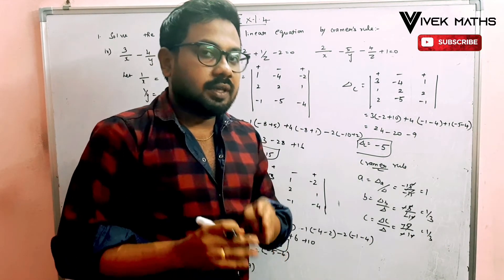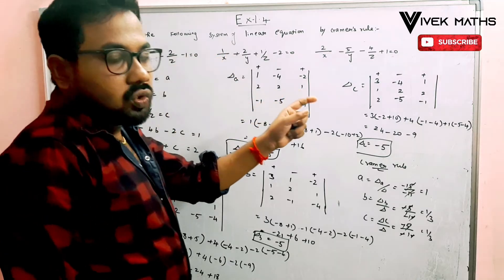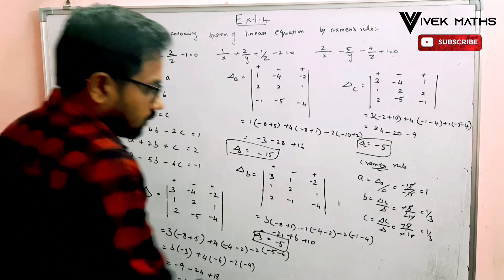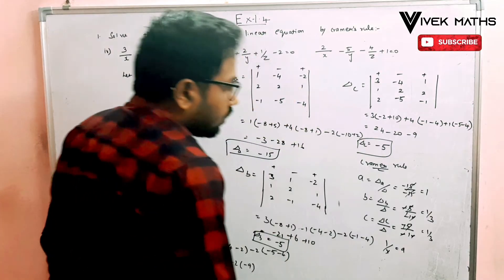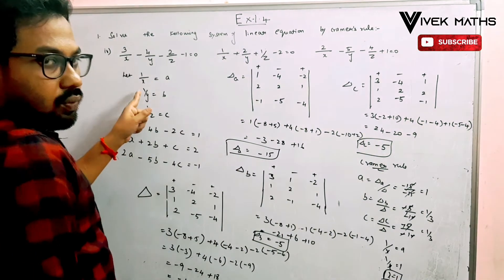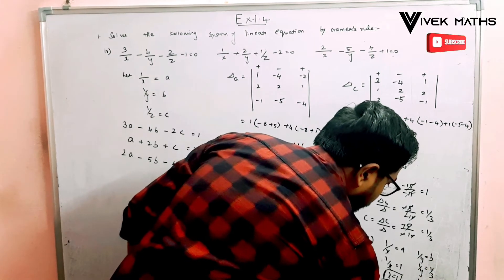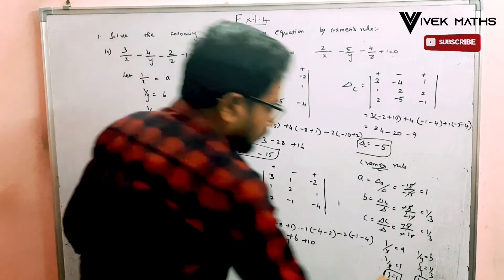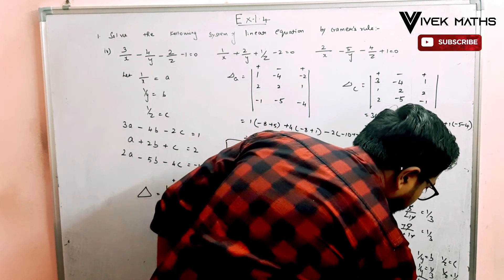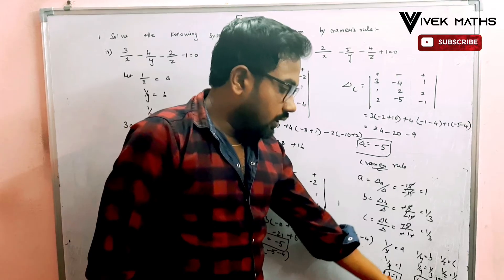Now converting back: since 1/x equals a equals 1, we get x equal to 1. Since 1/y equals b equals 1/3, we get y equal to 3. Since 1/z equals c equals 1/3, we get z equal to 3. So our solution is: x equals 1, y equals 3, and z equals 3.